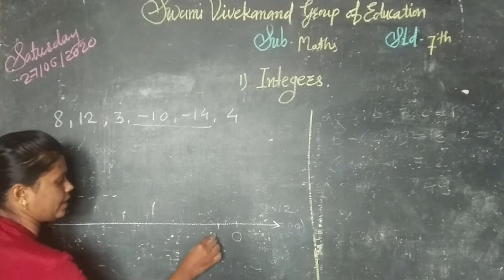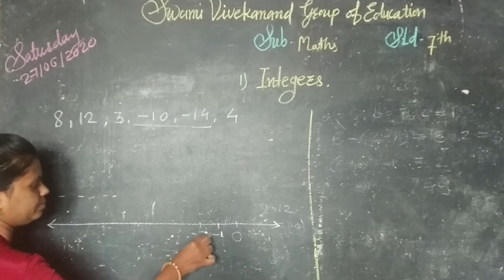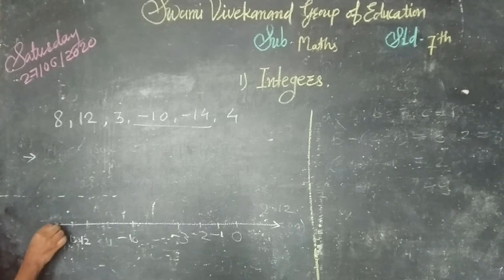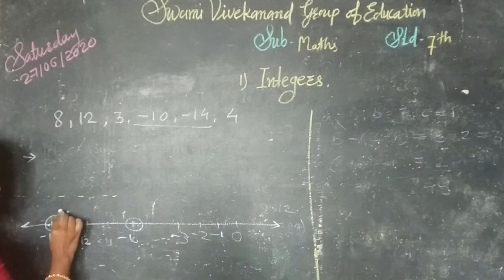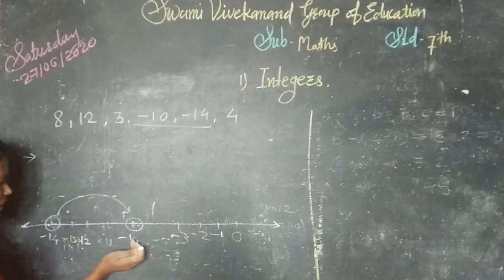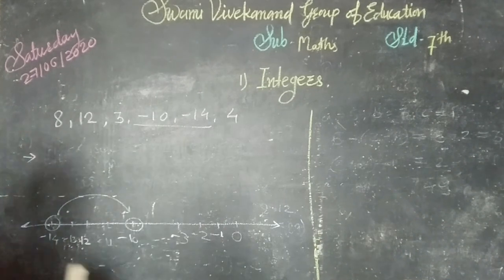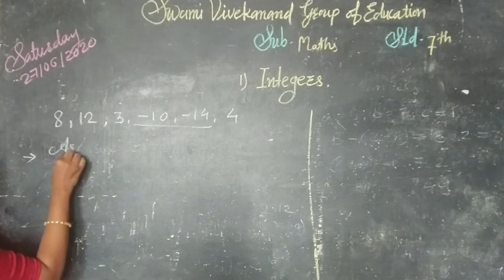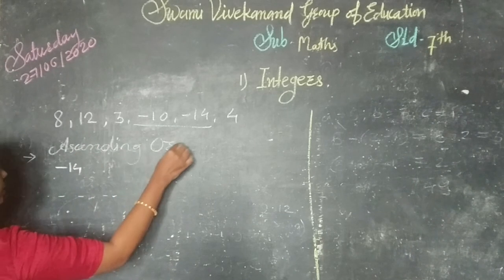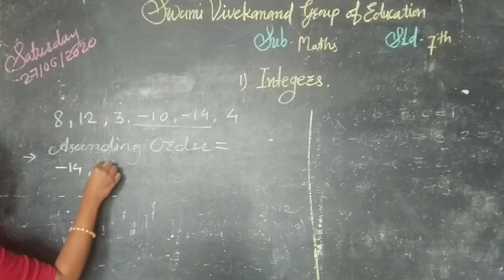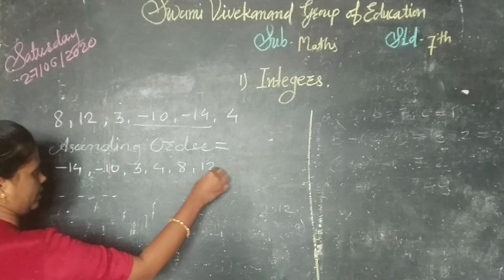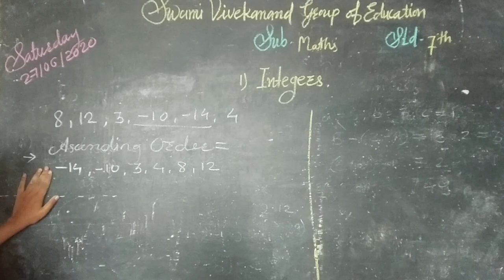If zero is here, we can write the negative numbers like minus 1, minus 2, minus 3, minus 10, minus 11, minus 12, minus 13, minus 14. You can check which is to the right — minus 14 is here and minus 10 is here, so minus 10 is towards the right hand side, that's why it is greater than minus 14. That means your least integer is minus 14. So you write minus 14 first in ascending order, then minus 10, then the positive integers: 3, 4, 8, and 12.